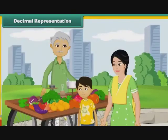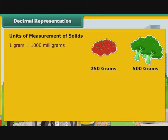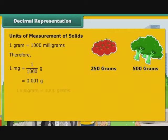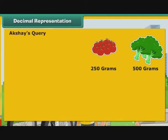Akshay accompanied his mother to the vegetable market. There, he saw his mother buy 250g and 500g of different vegetables. He wanted to express the quantities purchased as kilograms. Akshay must first understand the units used to measure quantities of solids. 1 gram is equal to 1000 mg. Therefore, 1 mg is equal to 1 by 1000 gram, that is equal to 0.001 gram. 1 kilogram is equal to 1000 grams. Therefore, 1 gram is equal to 1 by 1000 kg, that is equal to 0.001 kg.